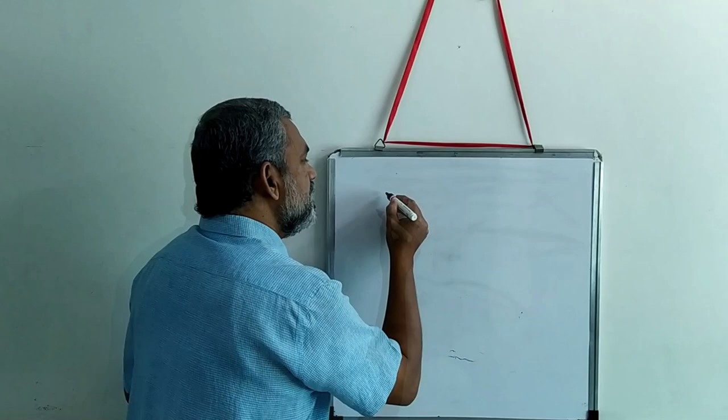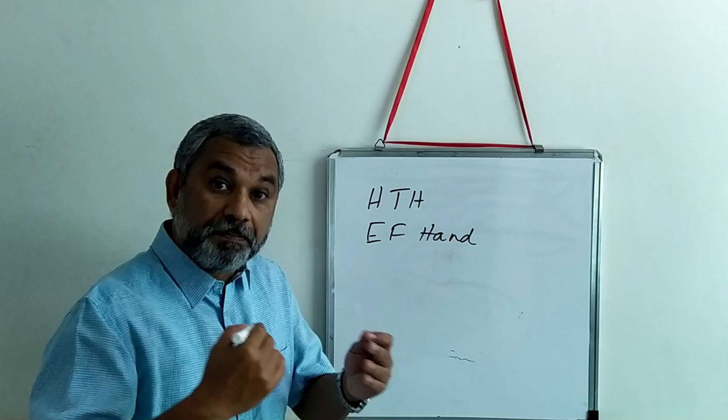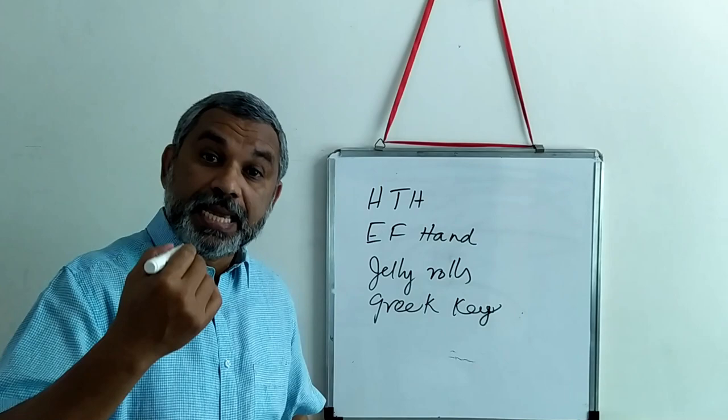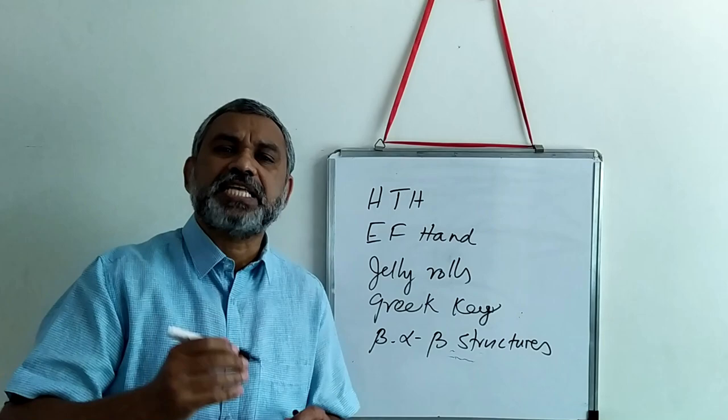The examples include helix-turn-helix, EF hand, and beta structures like jelly rolls and Greek key.